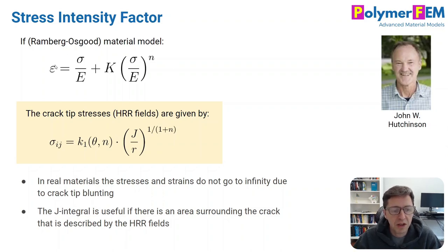And they show that the stress field is given by this equation. So it's a constant that depends on the orientation or the angle from the crack tip. N is the power exponent to the stress-strain curve and then you have the J-integral here divided by R and then it's a power exponent that depends on the type of hardening that you have in the non-linear material law.